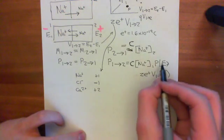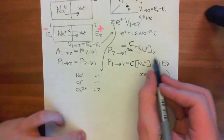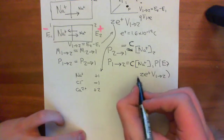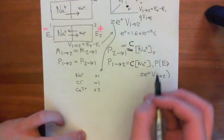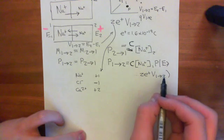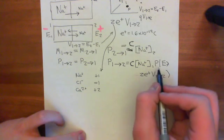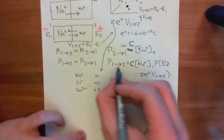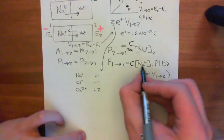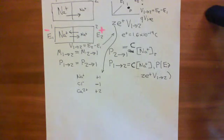That is where the Boltzmann distribution is going to come into this. If we want to work out what the probability of a molecule having energy greater than or equal to this is, we're going to need to use the Boltzmann distribution. Basically what we'll then do is we'll set this thing equal to this thing, and we'll get the Nernst equation from that.